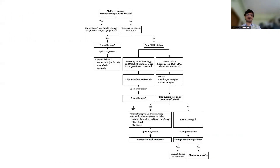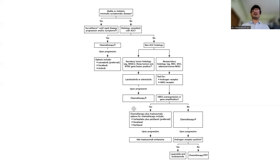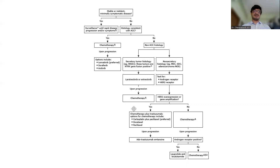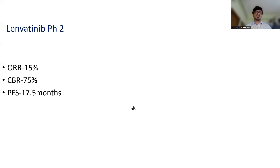In the present day, for metastatic malignant salivary gland cancers, we observe patients — whether they are symptomatic and how fast the disease is progressing. If the patient has fast progressing disease, defined as disease progression within the last one year, these patients become eligible for systemic therapy. If it is adenoid cystic carcinoma, the treatment options are first chemotherapy followed by multi-tyrosine kinase inhibitors like lenvatinib — which is preferred — sorafenib, and axitinib. Lenvatinib has a phase 2 study showing an overall response rate of 15%, clinical benefit rate of 75%, and progression-free survival of nearly 1.5 years.